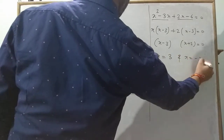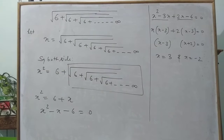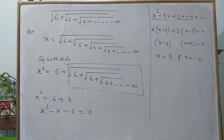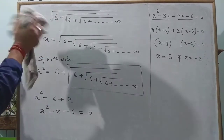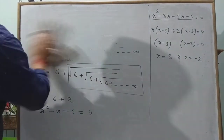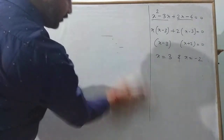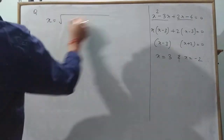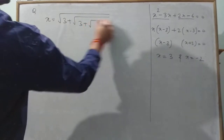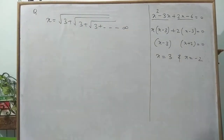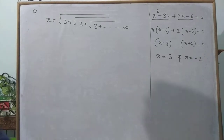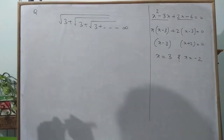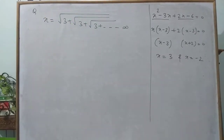So x = 3 and x = −2. These are the values of this type of equation. Now one more question of the same pattern: suppose the question is written as x = √(3 + √(3 + √3...)) till infinity. In the previous question x was not directly given, so we had to put it equal to x ourselves. Here x is directly given.